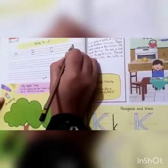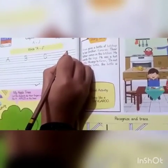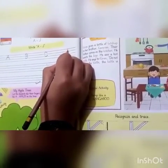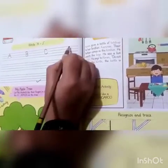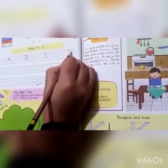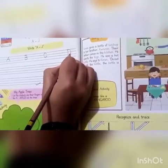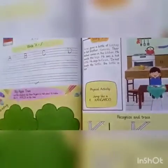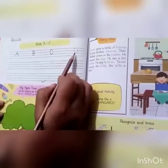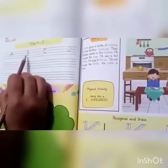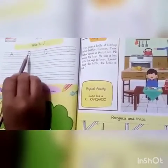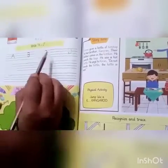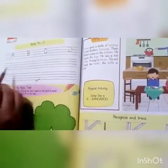What comes after C? D. Straight line hum draw kareenge, or pher iska aage ka loop banayenge. Toh kya likha humne? D. A, B, C, D.